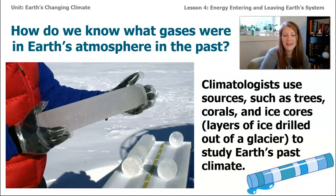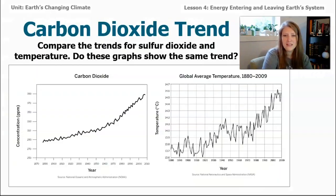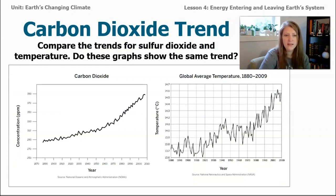By counting through the layers, you can see what type of gas was in the atmosphere at the time that layer was formed, including the amount of carbon dioxide, sulfur dioxide, methane, and other gases. So let's take a look at these two graphs. Compare them and look for trends — do these graphs have the same trend?